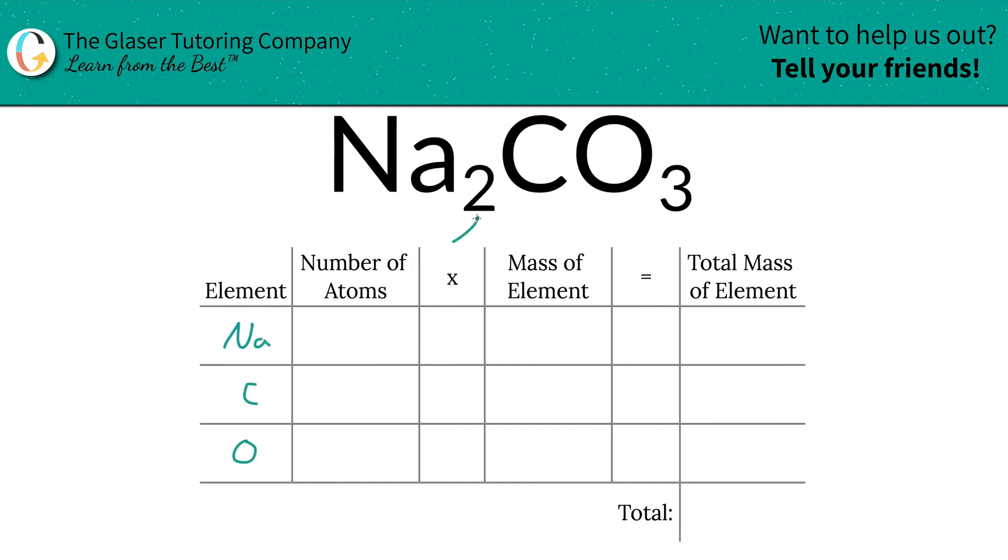Then the next step is to write down the number of atoms and that's where the subscripts come into play. Now if you don't see a subscript, put in a one. That's what it is assumed to be.